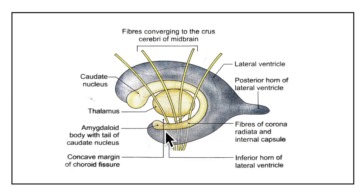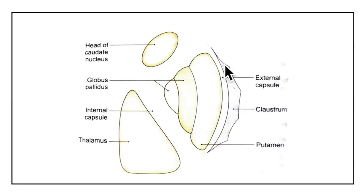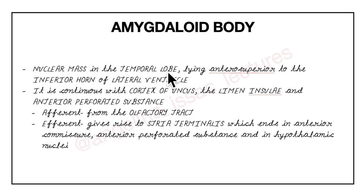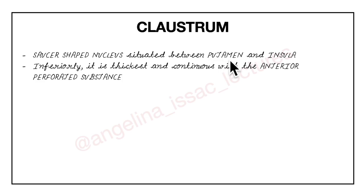Finally, let's look at the two other parts of the basal nuclei: the amygdaloid body and the claustrum. The amygdaloid body is a nuclear mass in the temporal lobe lying anterosuperior to the inferior horn of the lateral ventricle. It is continuous with the cortex of the uncus, the limen insulae, and the anterior perforated substance. The claustrum is a saucer-shaped nucleus situated between the putamen and the insula. Inferiorly it is thickest and continues with the anterior perforated substance.